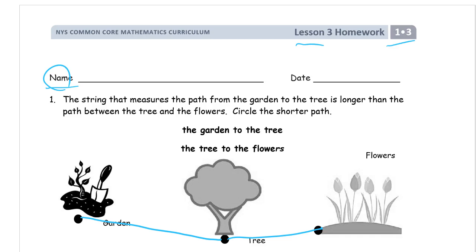So here it is from the tree to the flowers. If the garden to the tree is longer, the tree to the flowers has to be shorter. There I circled it.